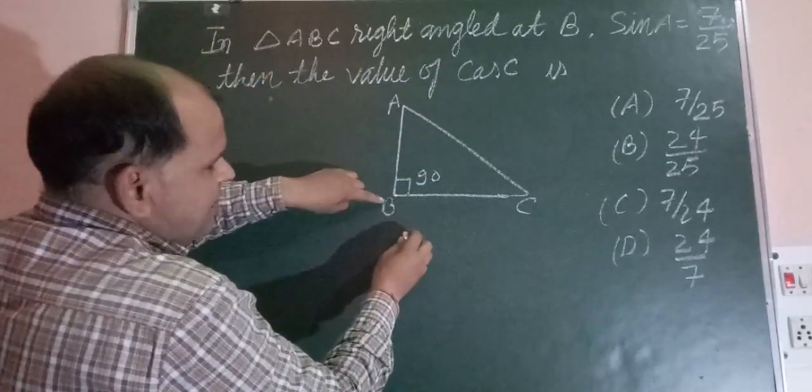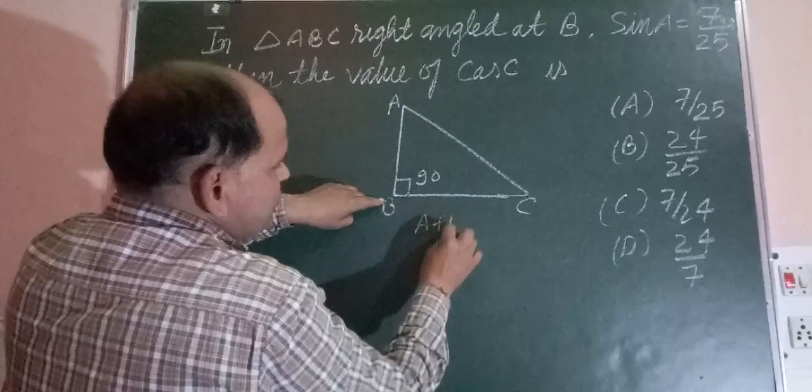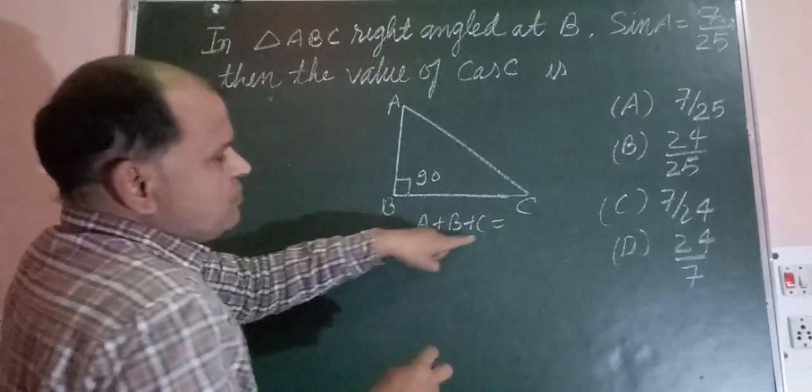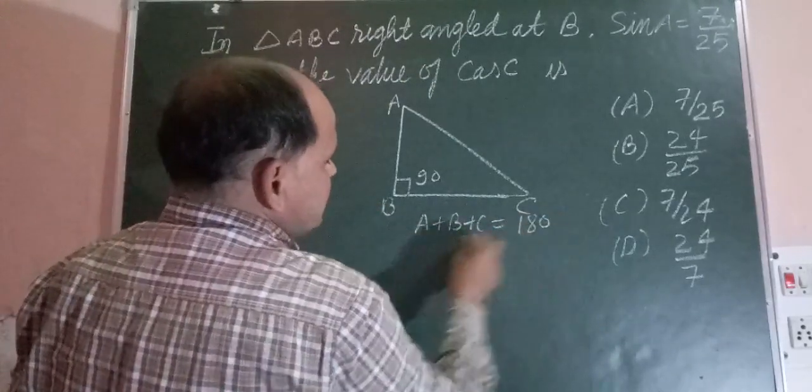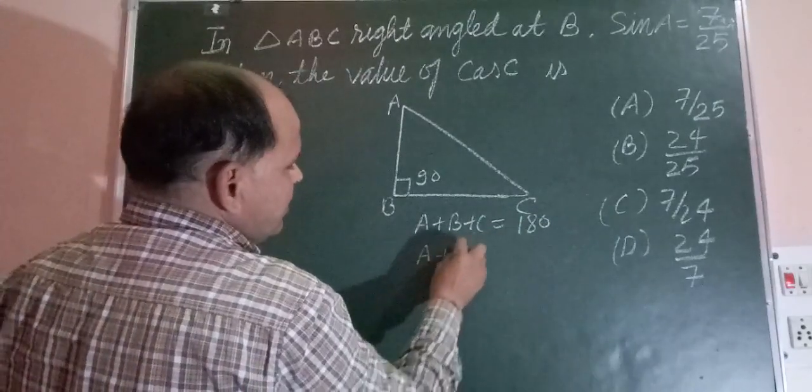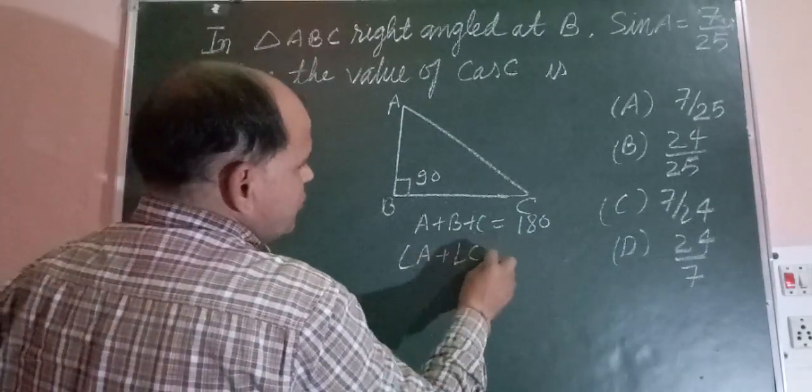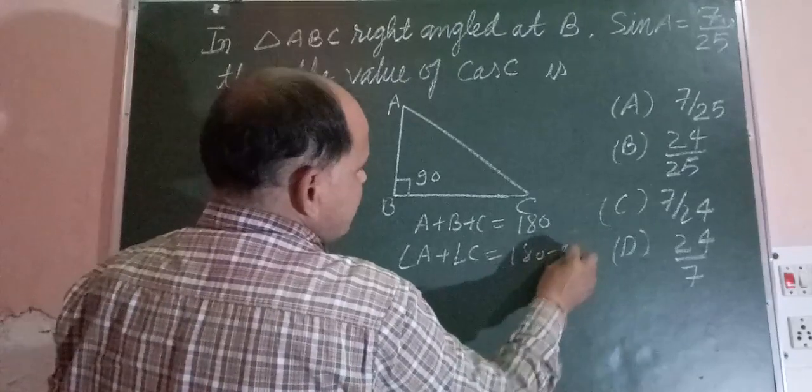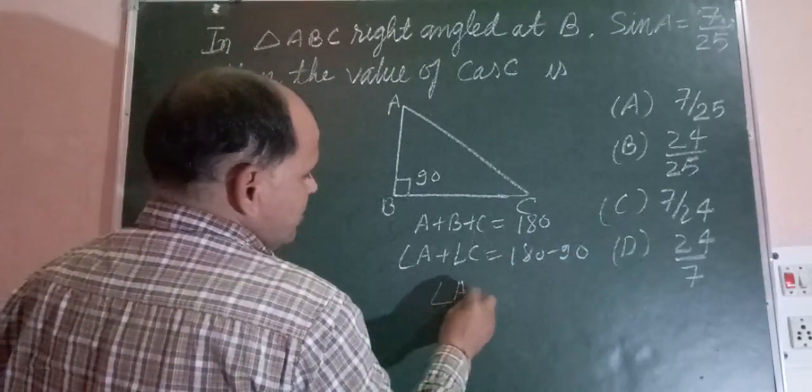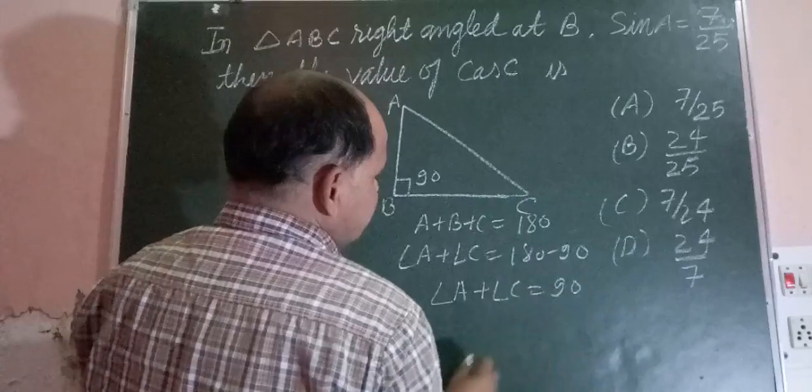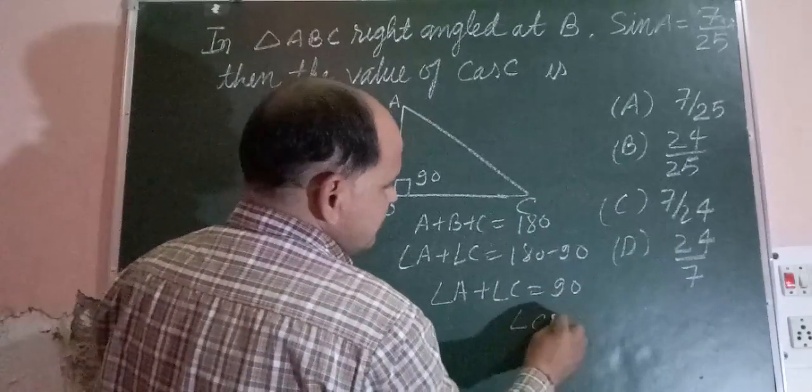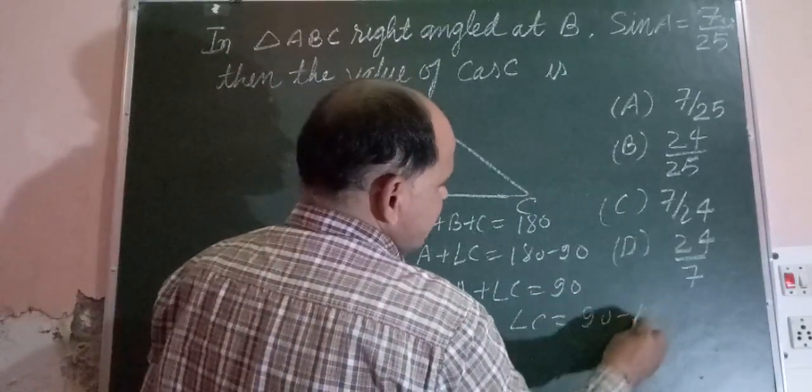Since B is 90 degrees, we know that angle A plus angle B plus angle C equals 180 degrees. Here B is 90, therefore angle A plus angle C equals 180 minus 90, or angle A plus angle C equals 90. So we can write angle C equals 90 minus angle A.